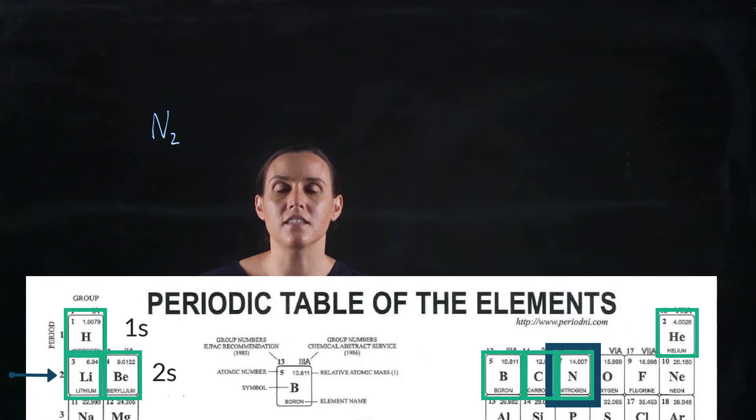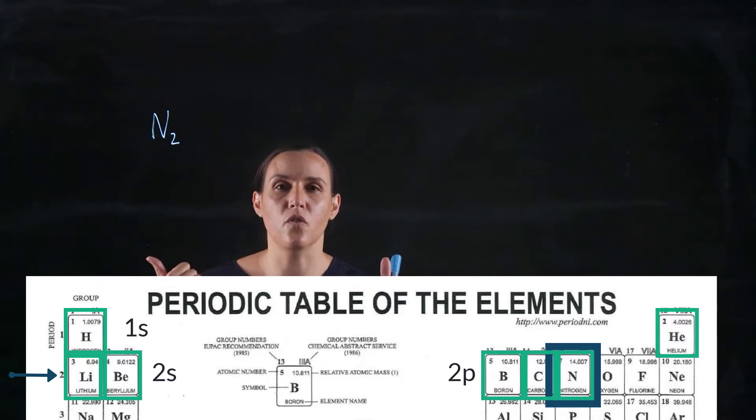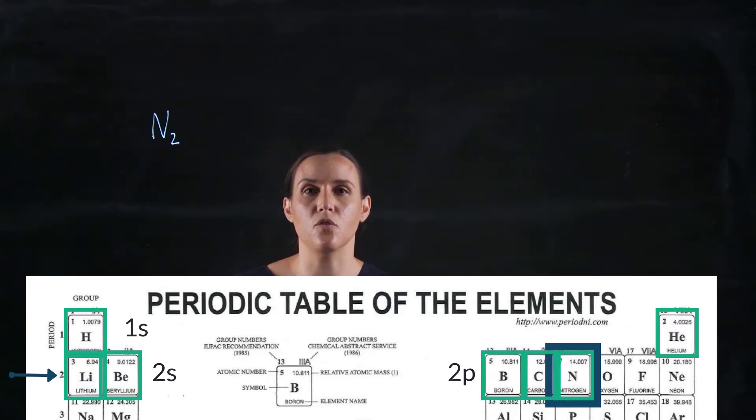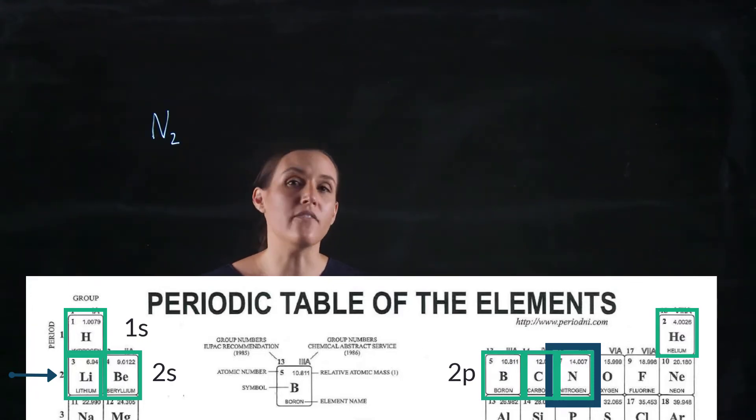So the valence shell would therefore have five valence electrons because two would be in the 1s, there'll be two in the 2s, and to get up to seven we've still got, so that gives us up to four, we've got three that are left in that 2p. So we've got five valence electrons.